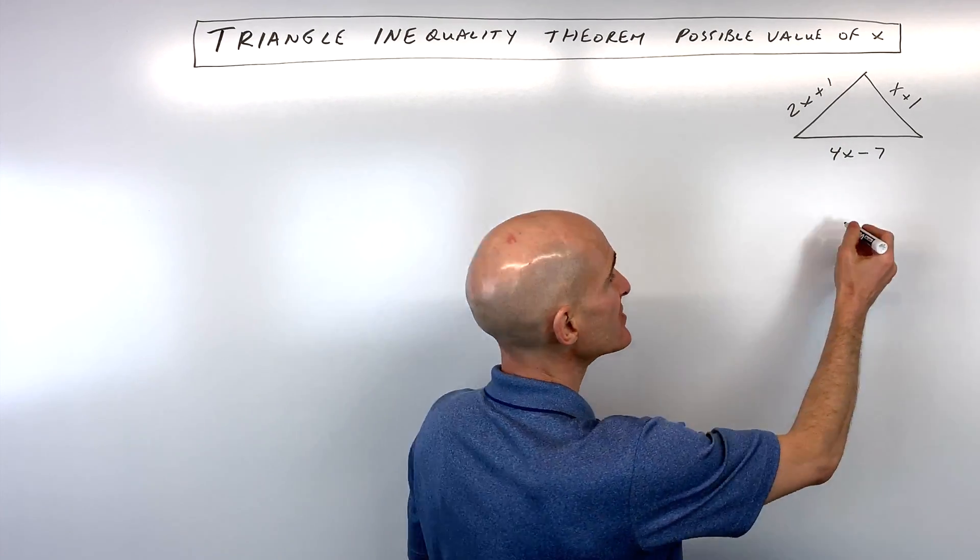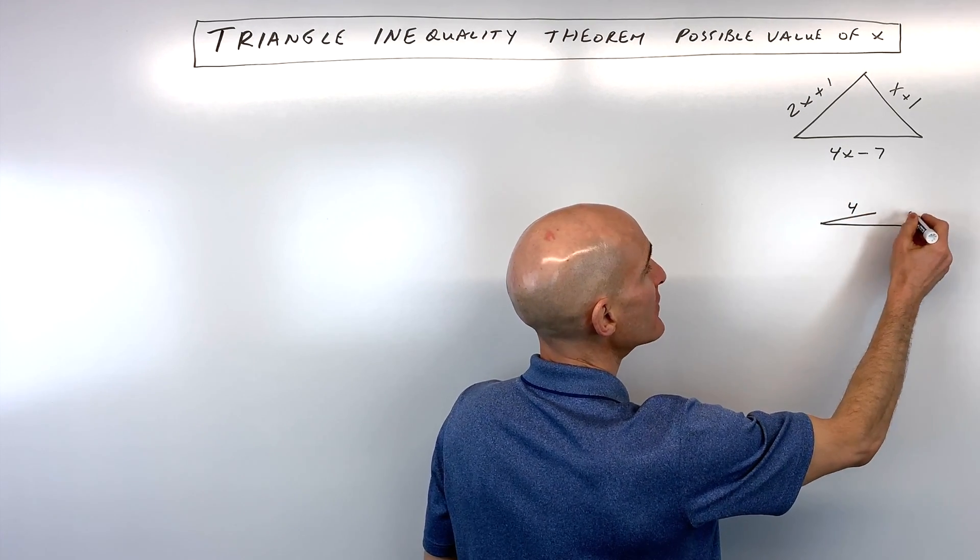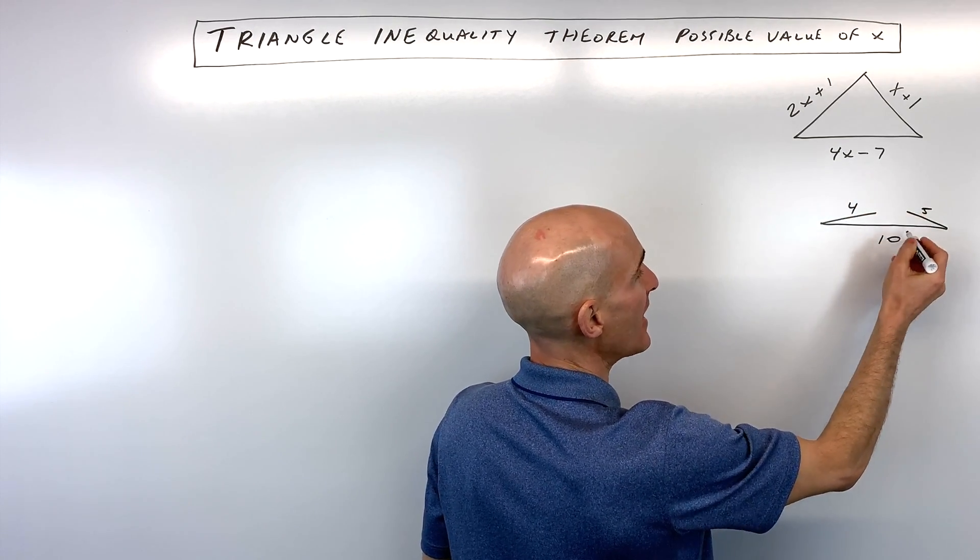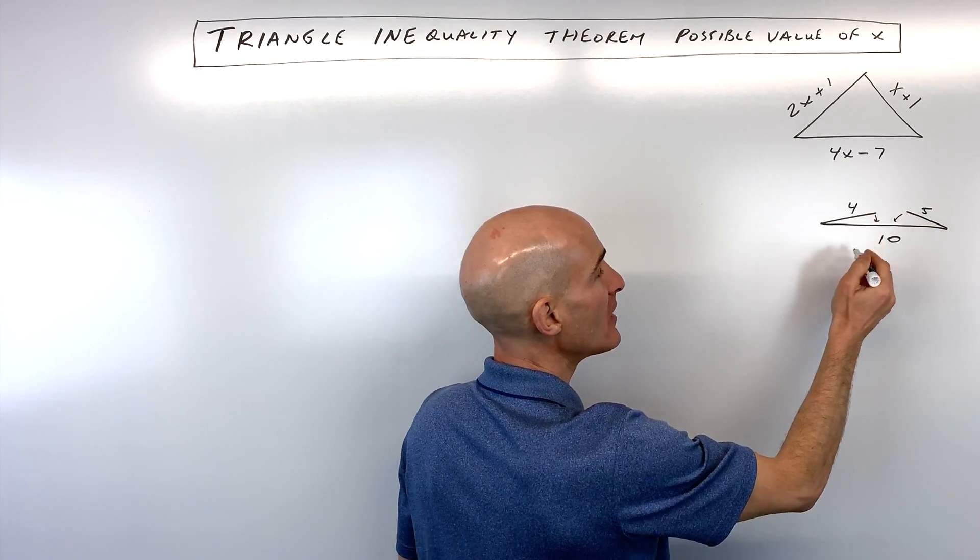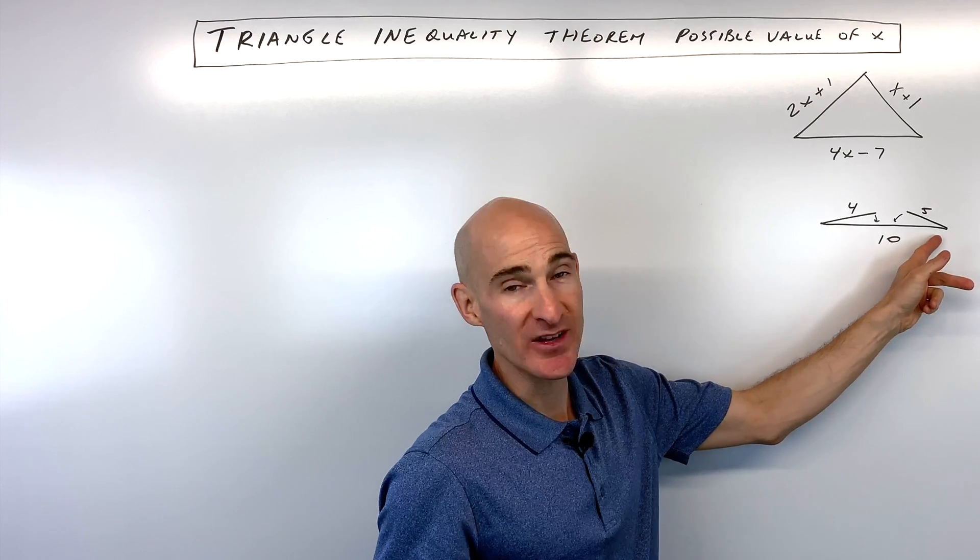If they're not, you would get a scenario like this where, say for example, if this was four and this was five and this is ten. See, even if you were to rotate these sides down, they're not going to be long enough to span that distance of ten units, right?